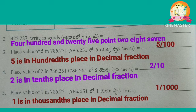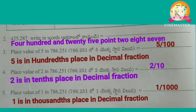Second problem: 425.287 — write in words. Third problem: Place value of 5 in 786.251. As 5 is in the hundredths place in the decimal fraction, the place value of 5 is 5 by 100. Place value of 2 in 786.251: as 2 is in the tenths place, the place value of 2 is 2 by 10. Place value of 1 in 786.251: as 1 is in the thousandths place, the place value of 1 is 1 by 1000.